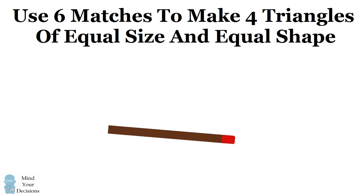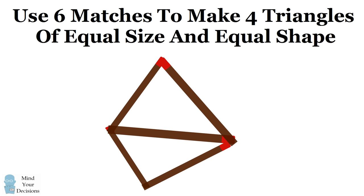When you lay the matches, it's very easy to make one triangle, and you can probably make a second triangle, but how do you make four triangles?